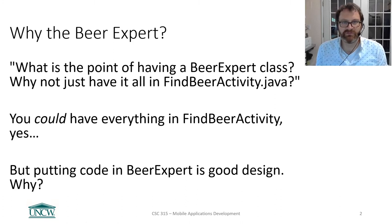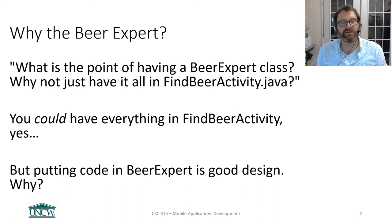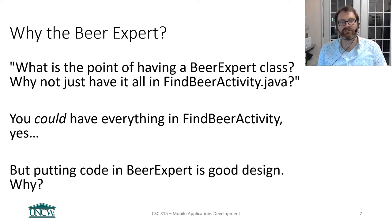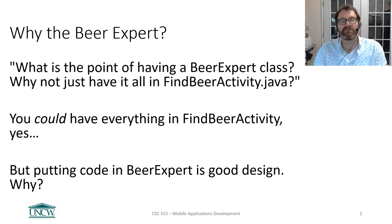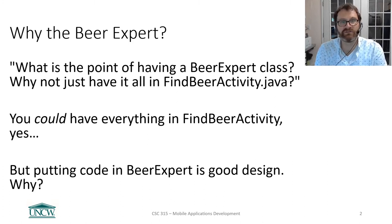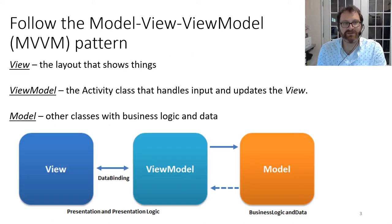In Chapter 2 Labs, where you were just learning how to build interactive apps, the Head First authors had you create the Beer Expert. A question I get quite a bit is: what is the point of having this Beer Expert class? Why not just have everything you need in FindBeerActivity.java? It seems like the Beer Expert is just extra work. Yes, you could have everything in FindBeerActivity, but having the code in the Beer Expert with the different flavor types and colors — that's good design.